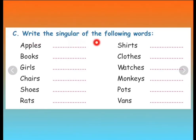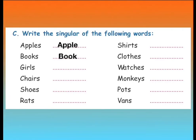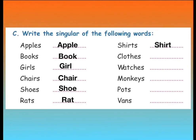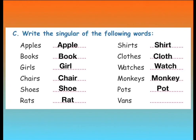Write the singular of the following words. And how will you make the words singular? By removing S or by removing ES. Let us do them one by one. Apples — Apple. Books — Book. Girls — Girl. Chairs — Chair. Shoes — Shoe. Rats — Rat. Shirts — Shirt. Clothes — Cloth. Watches — Watch. Monkeys — Monkey. Pots — Pot. Vans — Van.